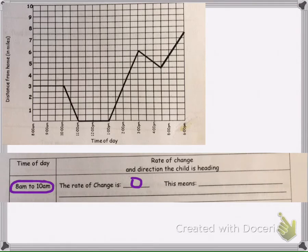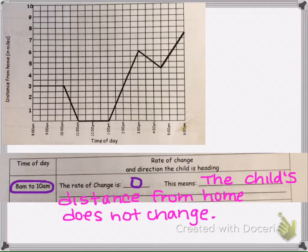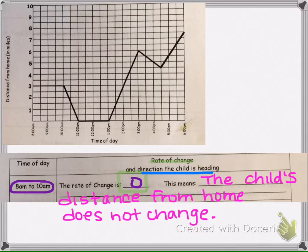What that means is that for those two hours, the child is not getting closer and is not getting further from home. The rate of change is 0. The child is not going towards home, is not going away — they're just staying wherever they are. Maybe they're at a friend's house or at the store for two hours, but their distance is not changing, so the rate of change is 0.